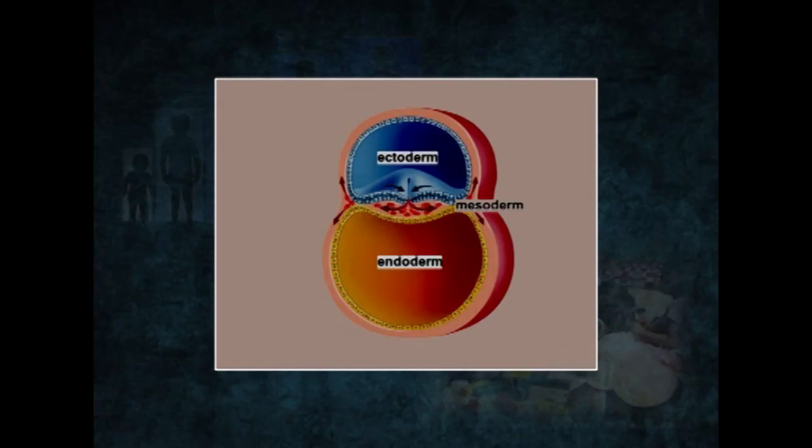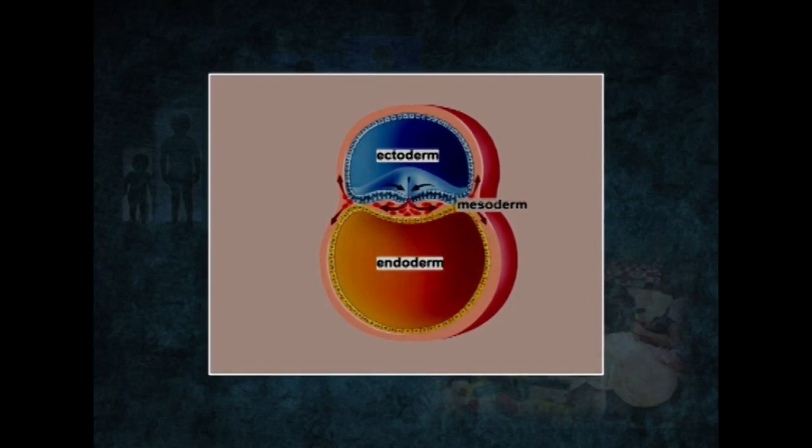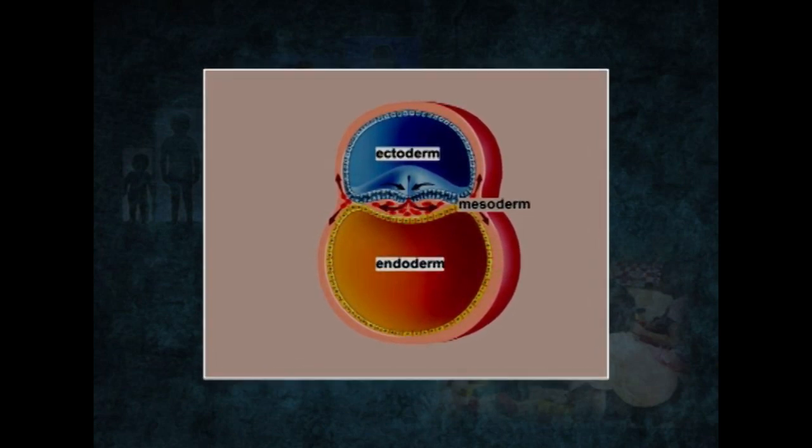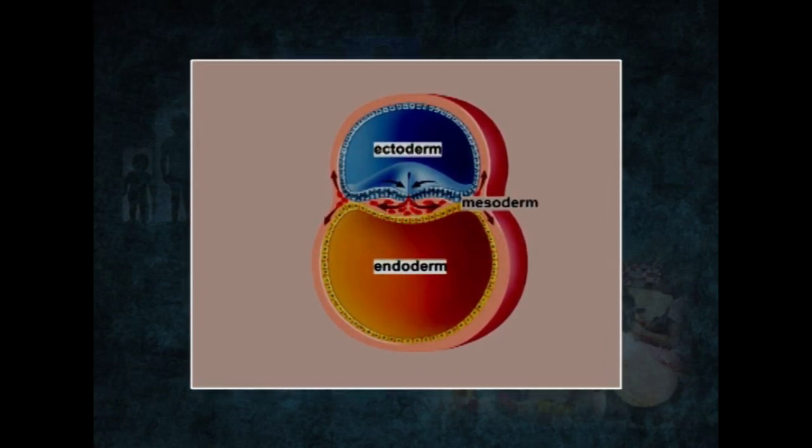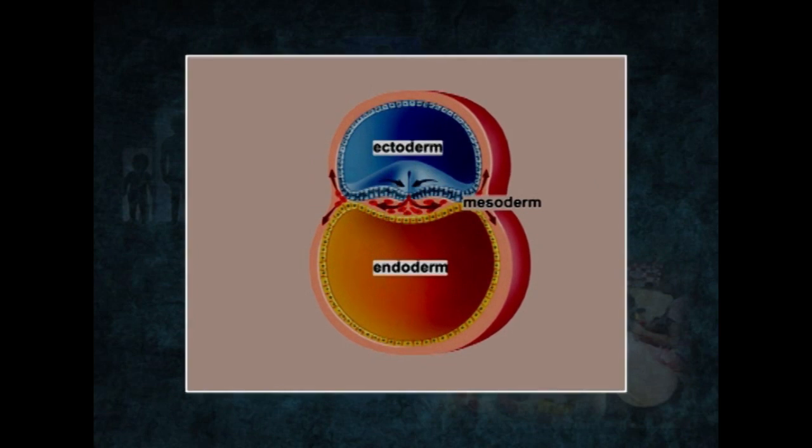Every body part eventually develops from these three basic layers. The endoderm primarily produces the internal body parts, the mesoderm primarily produces the parts that surround the internal areas, and the ectoderm produces the surface parts. As the embryo's three layers form, the life support systems for the embryo develop rapidly. These life support systems include the amnion, the umbilical cord which develops from the fertilized egg, and the placenta.